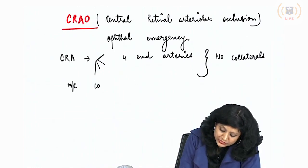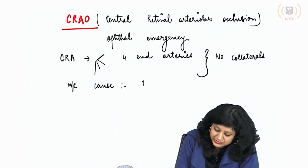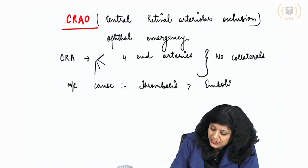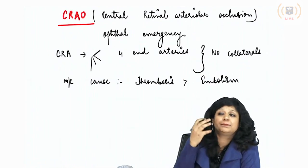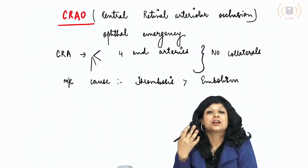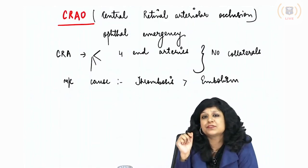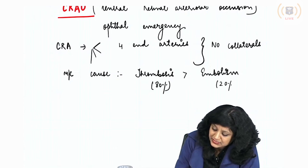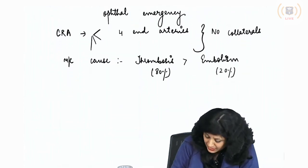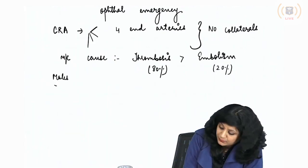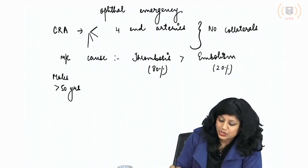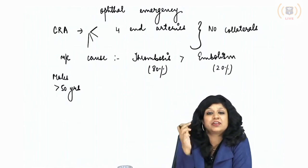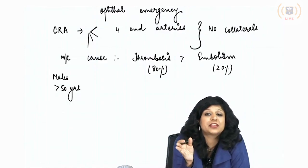The most common cause is thrombosis followed by embolism — mostly thromboembolism involving a clot, plaque, atherosclerosis, or cholesterol plaque. In 80% of cases it is thrombosis; in 20% it is embolism. These conditions are more common in males over 50 years of age. We expect central retinal arteriolar occlusion after 50 years of age, especially in males.